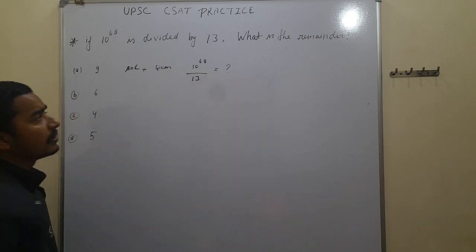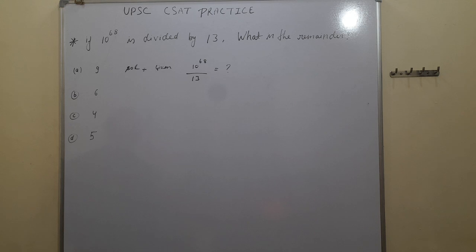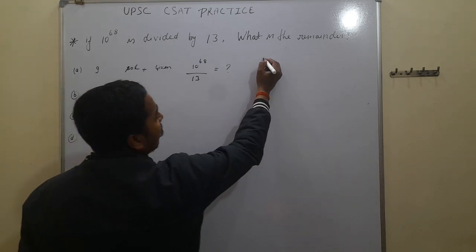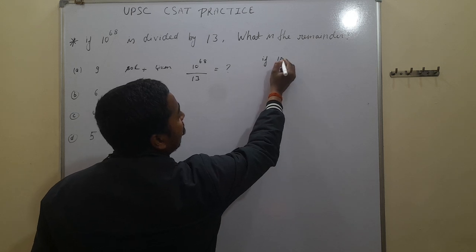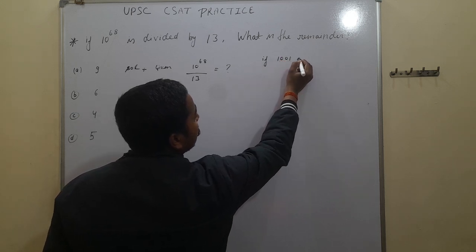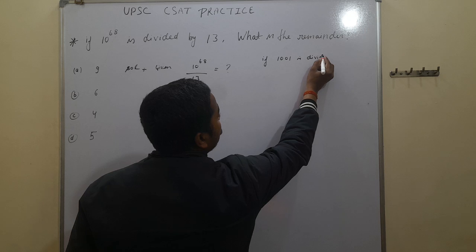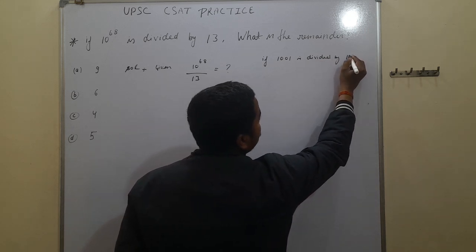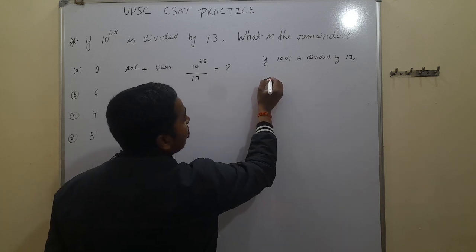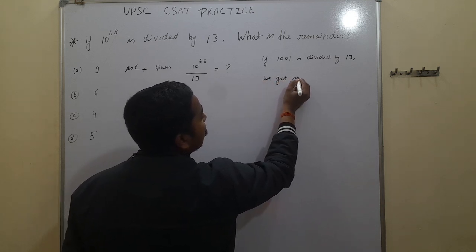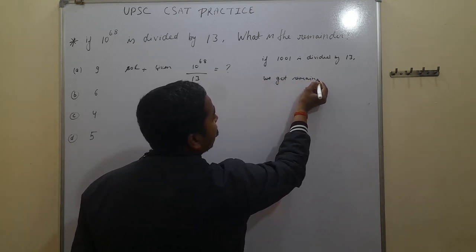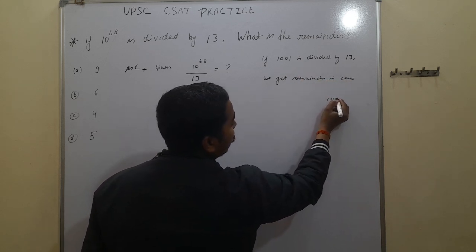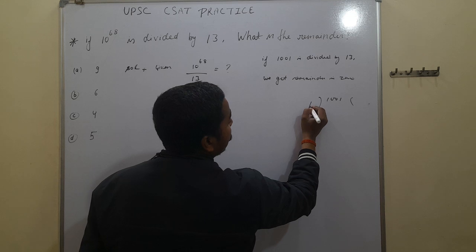First, when we have to solve this type of question, we must remember that if 1001 is divided by 13, we get remainder is 0. When we divide 1001 with 13, we get remainder 0.